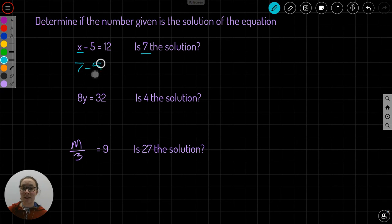7 minus 5 equals 12. Is that statement true? No, it's not. 7 minus 5 is 2, so this is not true. No. Not true. Let's check the next one.